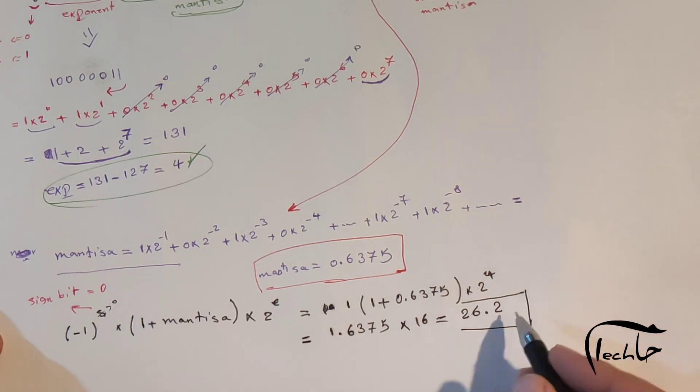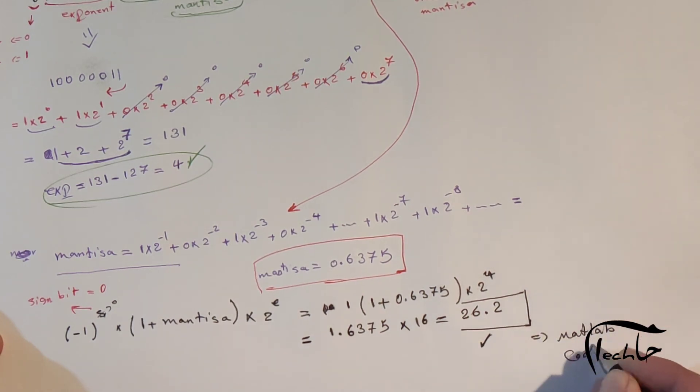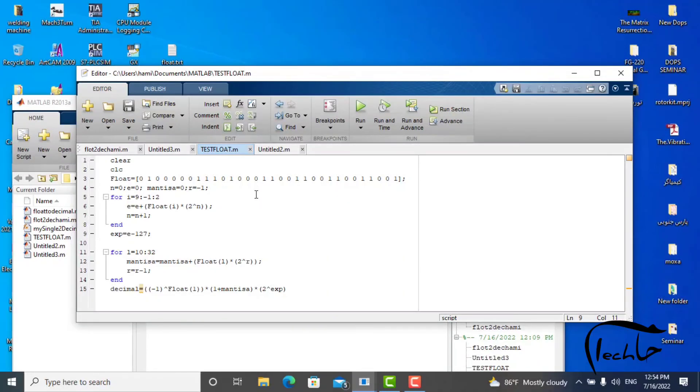Okay guys, let's check this one with MATLAB code. Now you can see the MATLAB code for this conversion. First I get the 32 bits in the matrix. I use a for loop to find the exponent from 2nd bit to 9th bit. I use again a for loop to find mantissa value from 10th bit to 32nd bit. And finally put them into the formula to get decimal value.